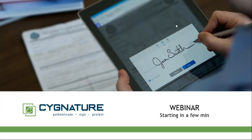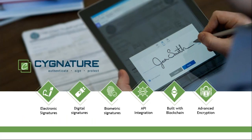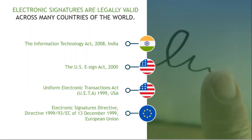Signature is an electronic signing tool. It covers the maximum number of signature types, including electronic, digital, and biometric signatures. It also offers API integration and is built on blockchain. In most countries, information technology acts and electronic signing acts have allowed electronic signatures as legally valid — including in India and the US — which is a very good step toward the digital age.